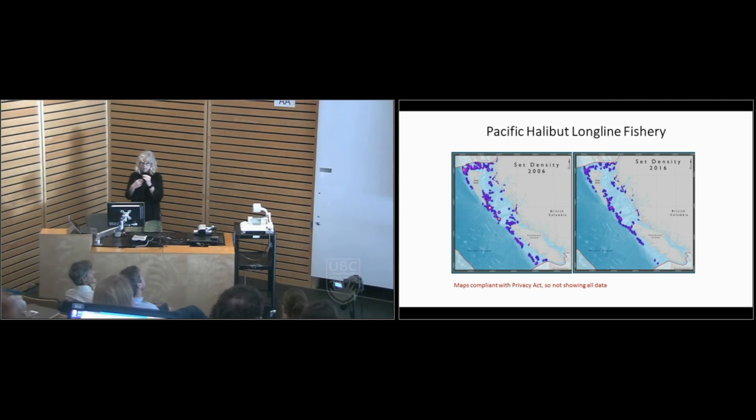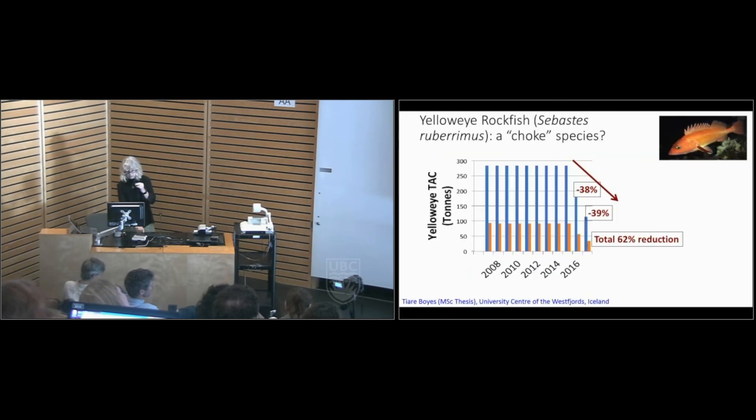This is a map of all fishing locations, all fishing sets in the halibut longline fishery in 2006, just before integration started, and 2016. This map doesn't really show you how much the footprint of this fishery has decreased because this map is compliant with the Privacy Act. We're not allowed to show you any place that's fished that has less than three vessels fishing in it. So, if you could see the raw data, you would see on the left in 2006 a lot more fishing happening in the middle of Hecate Strait and a lot more fishing down the coast of the mainland there. And on the right-hand side, 2016, the map pretty much looks like it looks now. So, there's been a large decrease in the footprint of this fishery.